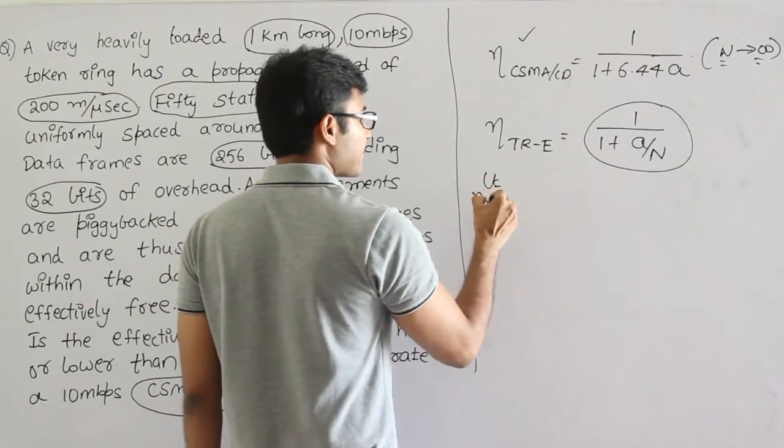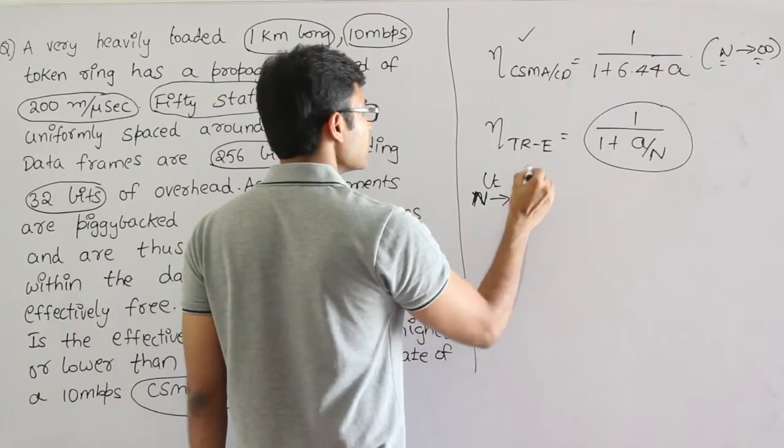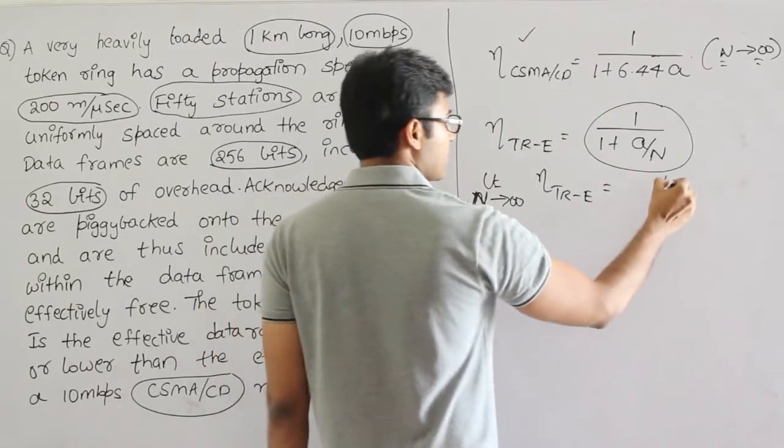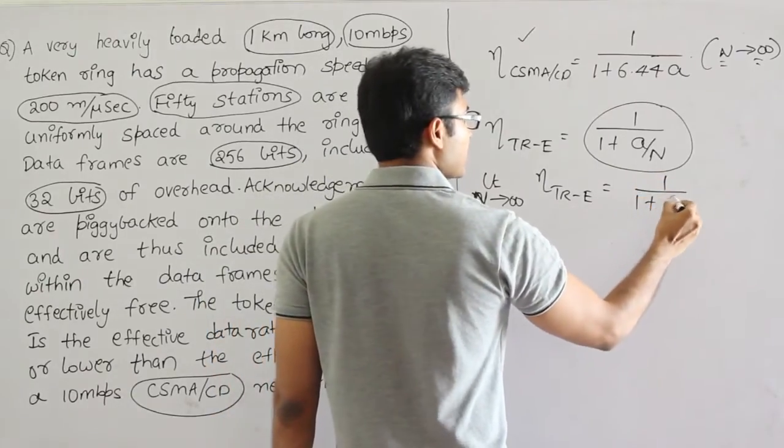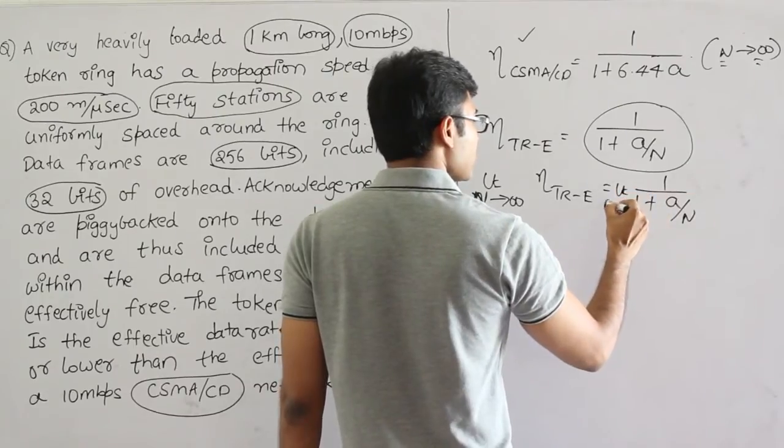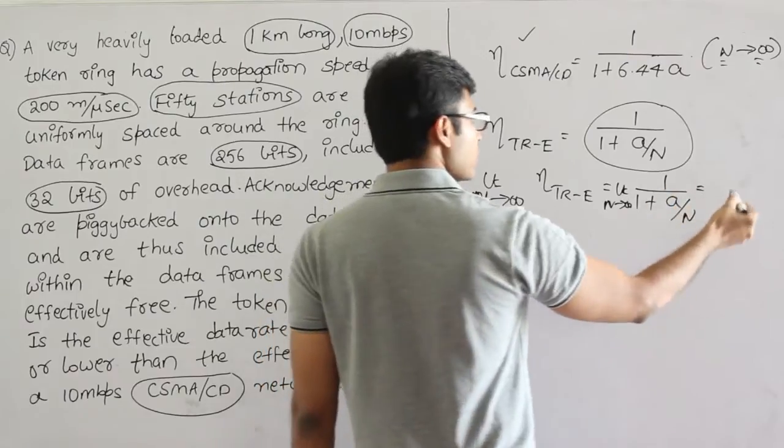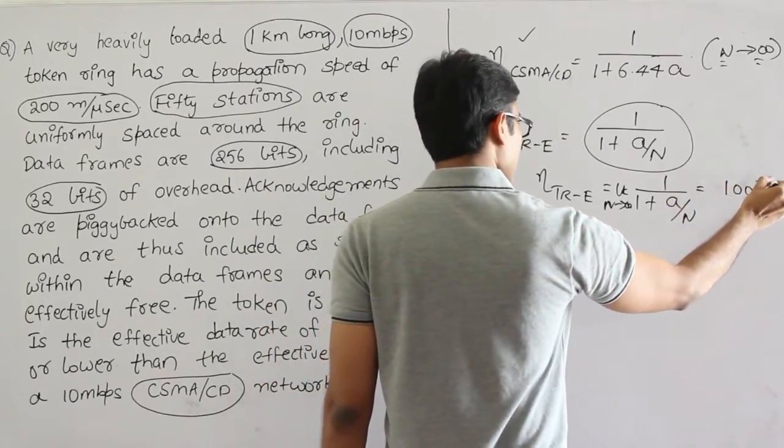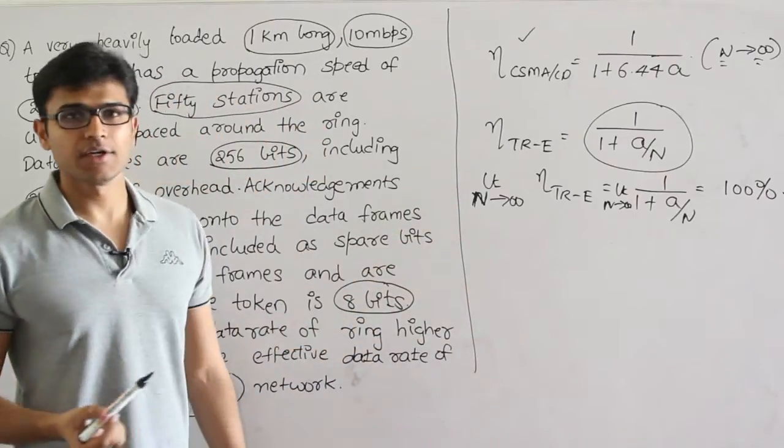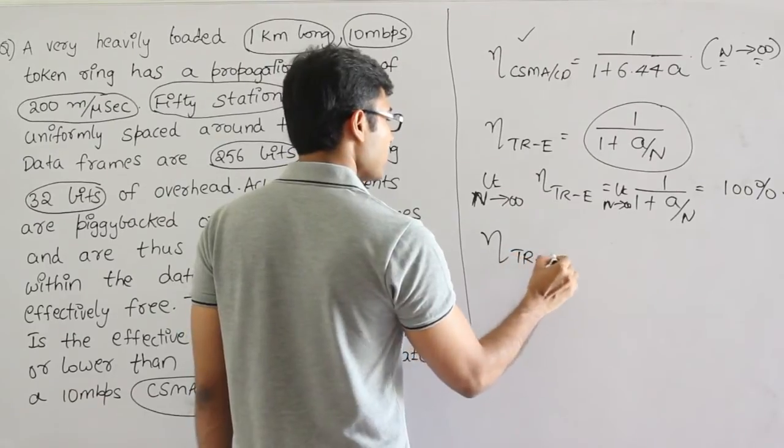So, limit number of stations tends to infinity. Efficiency of Token Ring in early token reinsertion is 1 upon 1 plus A by N, limit N tends to infinity. Now what is this value? If you put infinity here it is going to be 100%. Which means efficiency of Token Ring in early token reinsertion is 100%.